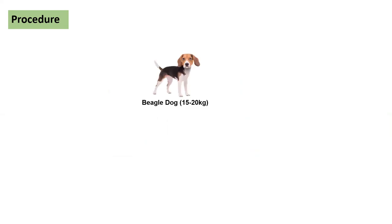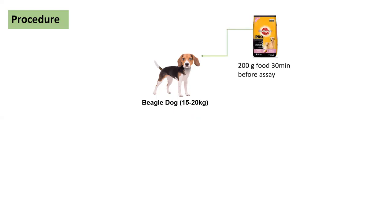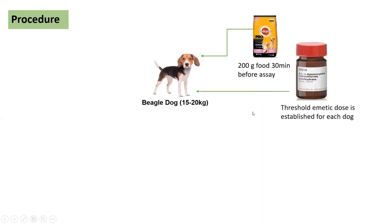For the anti-emetic activity procedure, we use a beagle dog — a specific type of dog which is prone to vomiting activity. We use four to five beagle dogs whose weights are between 15 to 20 kilograms. Before going for the assay, the dogs are fed with 200 grams of feed 30 minutes before the assay. The dogs are then injected intramuscularly with apomorphine hydrochloride to find out the threshold emetic dose.